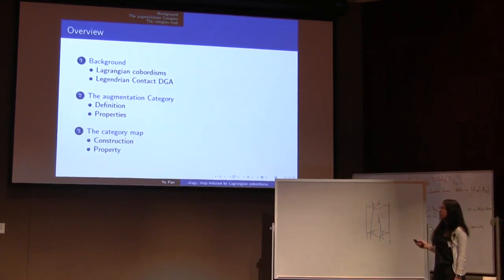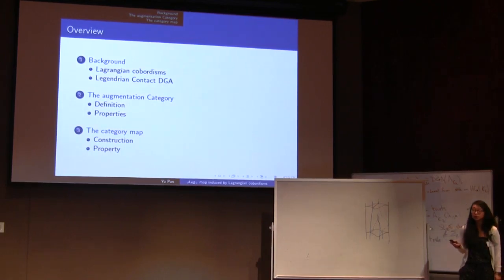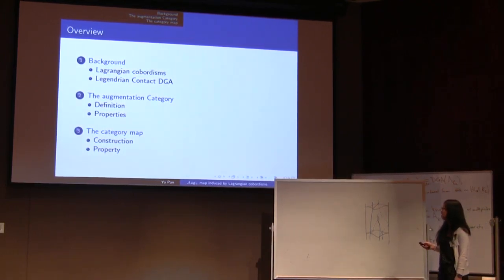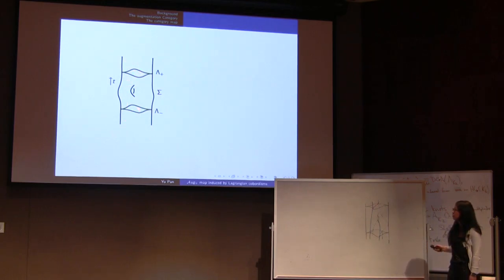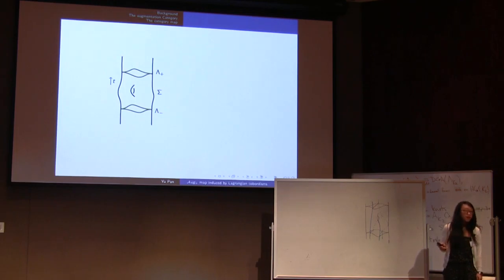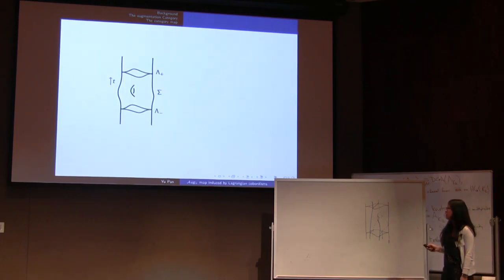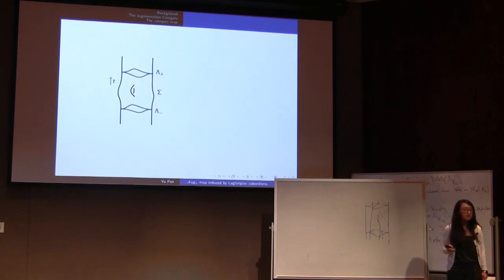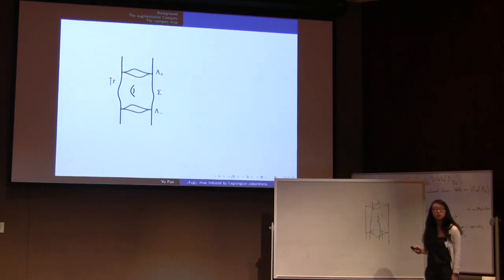Basically, a Lagrangian cobordism is a two-dimensional surface that connects Legendrian knots. When I say connecting, I mean it is cylindrical over these Legendrian knots on the top and bottom and then compact in the middle. A natural question to ask is: in what condition can the cobordism exist? That means, if you have two Legendrian knots, is there a cobordism between them?